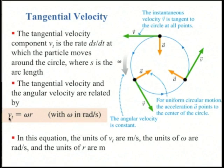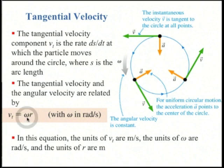Looking carefully at the units: v sub t is in meters per second, omega is in radians per second, and r is in meters. Radians effectively disappear in this equation — the meters come from r and the per second comes from omega.